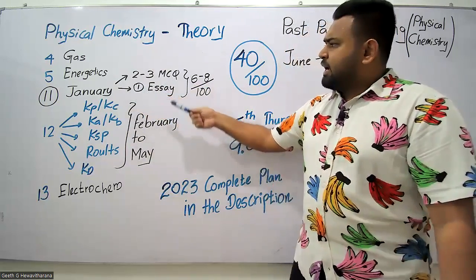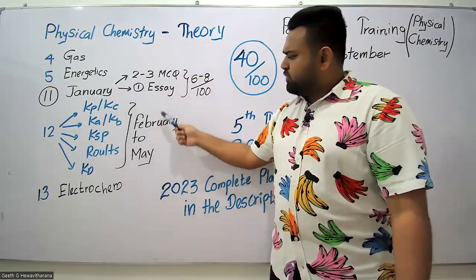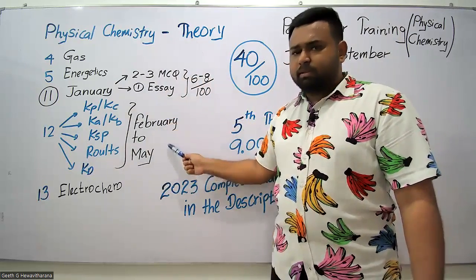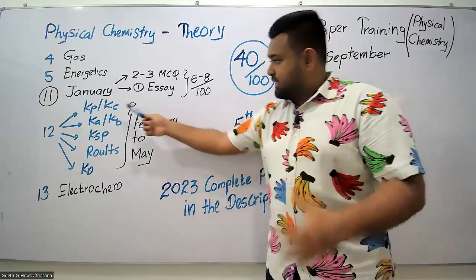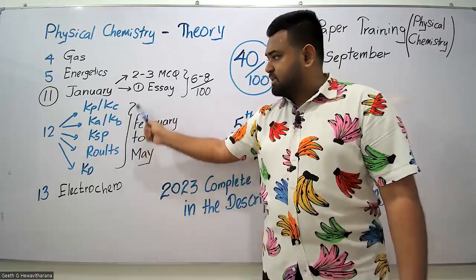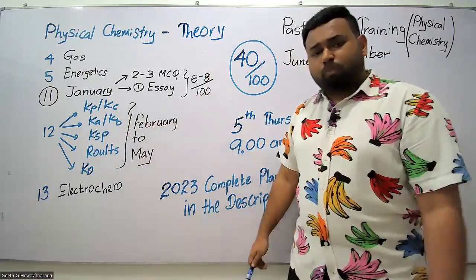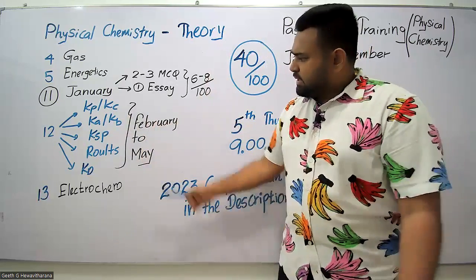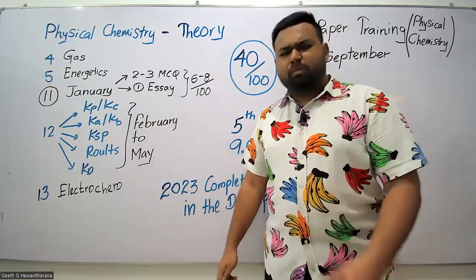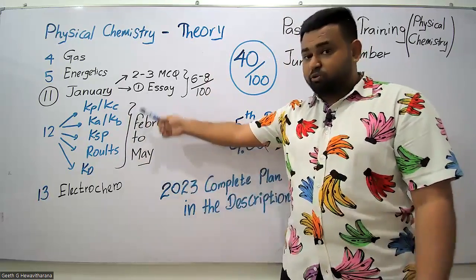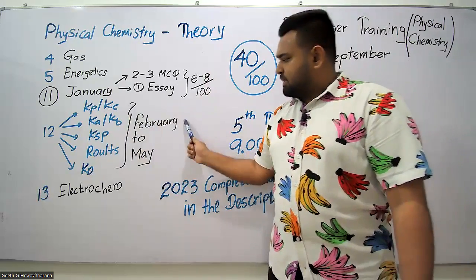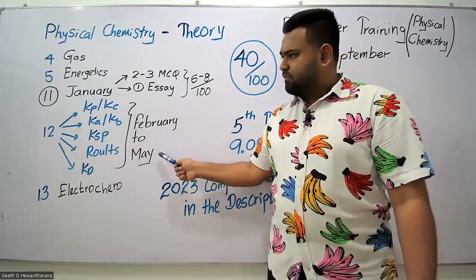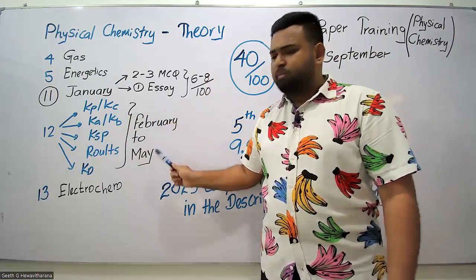Once we finish this, we're moving to Unit 12, the heart. There are five subtopics—this is the largest topic in your syllabus. It needs more than 4 to 5 months to complete because there are five topics. Therefore, I'm supposed to finish this entire syllabus by May.